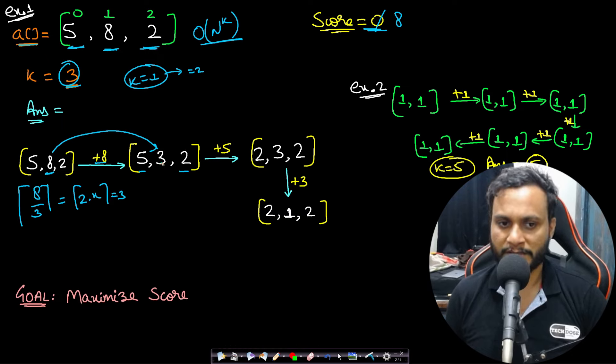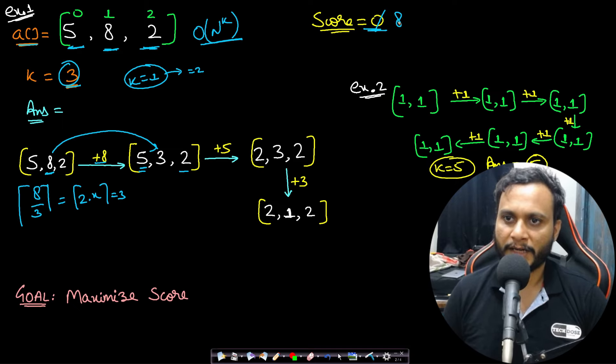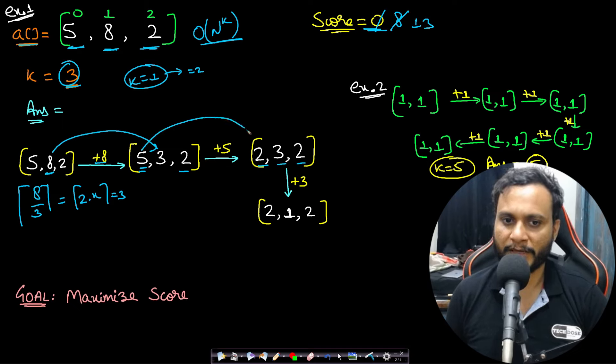Now in this step, for k equals 2, we will be picking one more item. Picking 5 was helpful for us to get to the optimal answer. So let's say we picked 5 and the score will become 13, then we will reach to [2,3,2]. Because 5 divided by 3 and taking the ceiling of it will be 2.